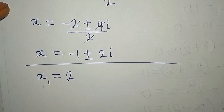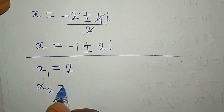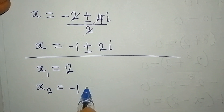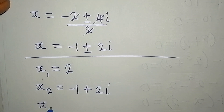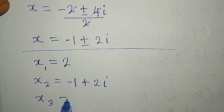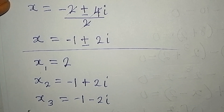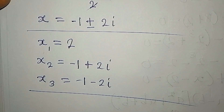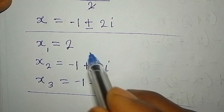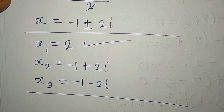So we now have a combined solution. The three solutions are: x₁ equals 2 (the first real solution); x₂ equals negative 1 plus 2i; and x₃ equals negative 1 minus 2i. These are the three solutions, but the only real solution is x equals 2. Thank you for watching.